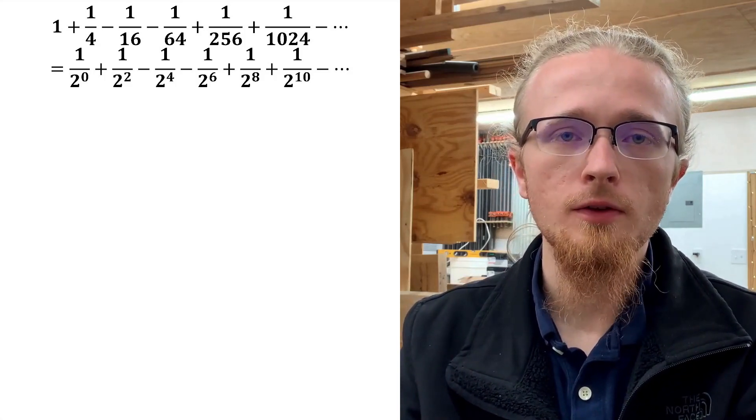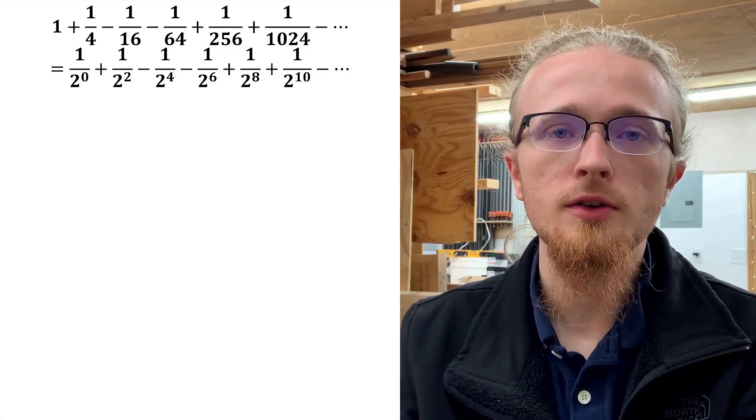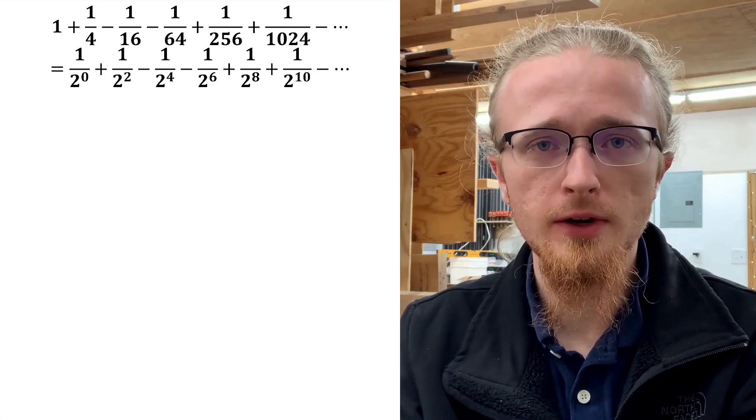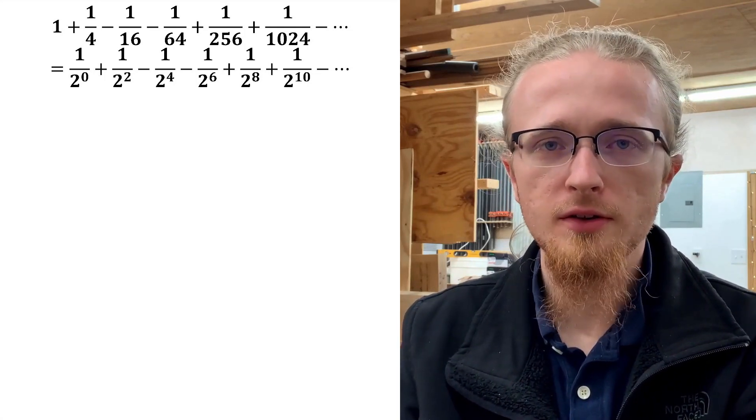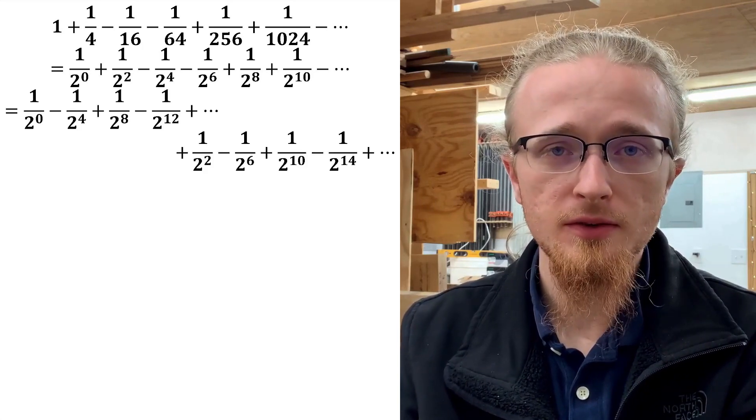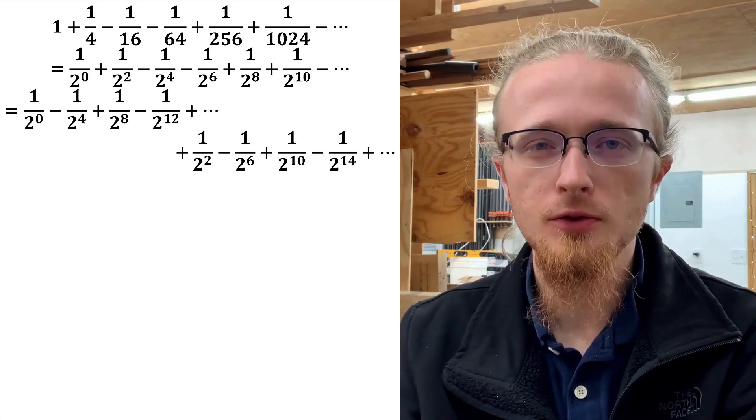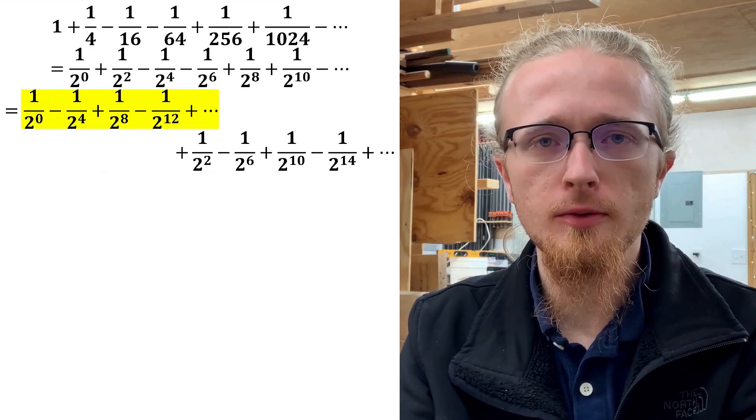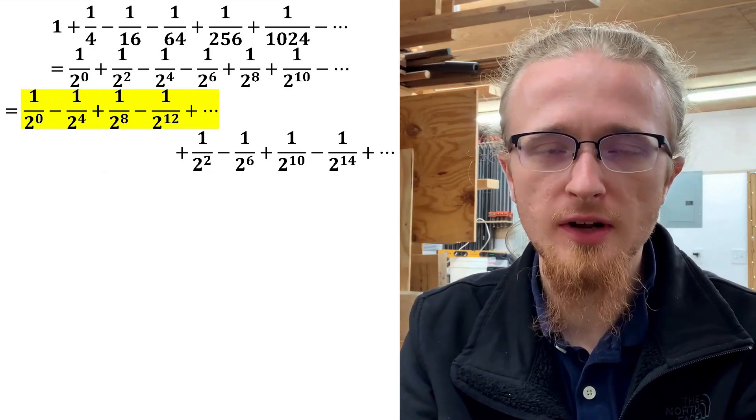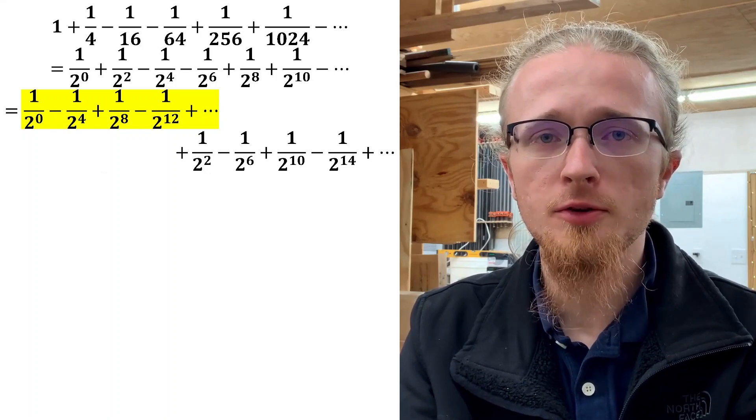Now, the next step in breaking down this sum is that key one I was talking about earlier, where we figure out how to handle that weird sign-flipping. The approach that ends up working is to split this infinite series into a sum of two infinite series. The first of the two series consists of terms whose power of 2 in the denominator is a multiple of 4.